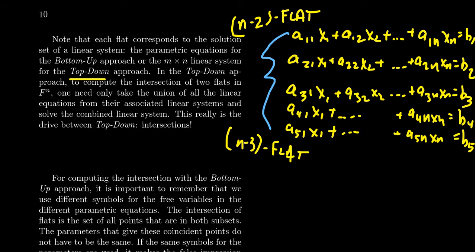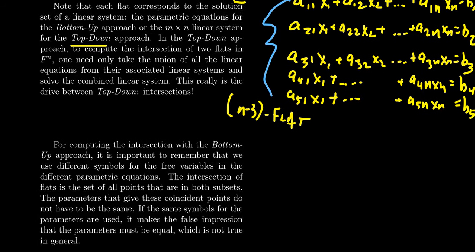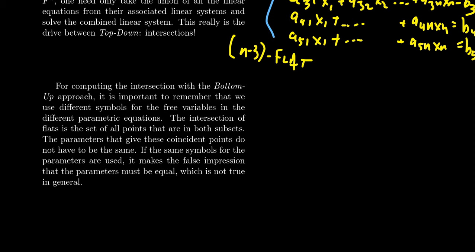The bottom-up approach takes a little bit more effort. It's still doable, but when we're computing the intersection with the bottom-up approach, we have to be a little bit more careful. So we might have something like X equals some X0, plus S*V1 plus T*V2 plus R*V3.